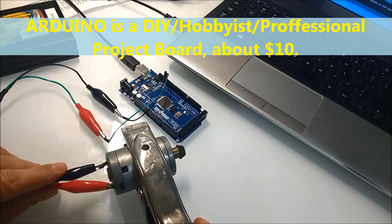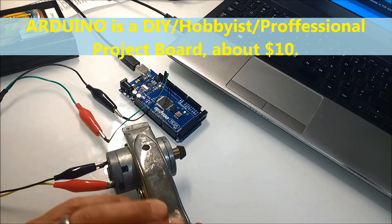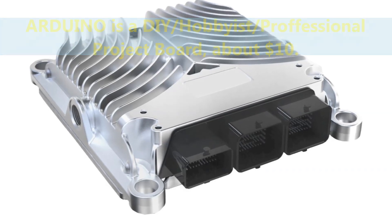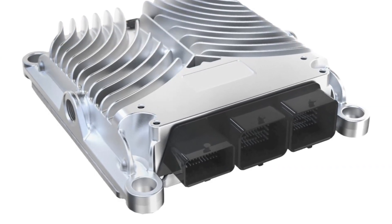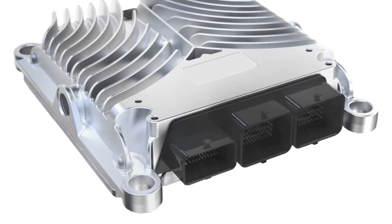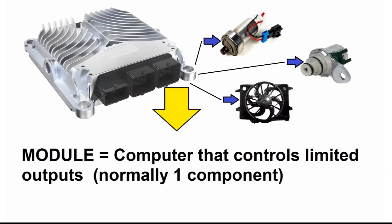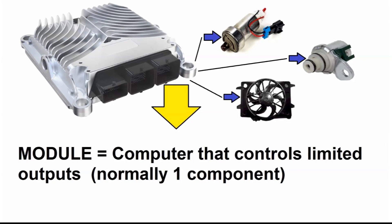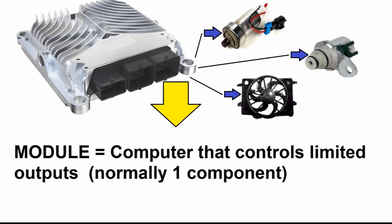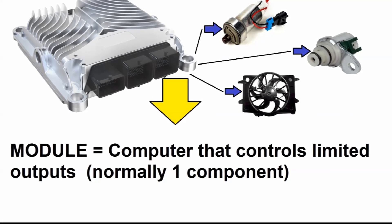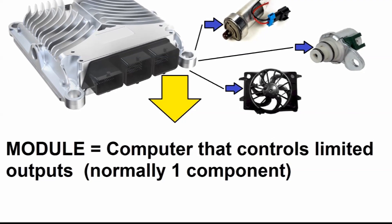In our previous videos, we showed the difference between modules and computers, like an ECM. A module is a computer that tends to control one or two components. It may have a couple of inputs, one, two, or three, but very few outputs, as opposed to a TCM, a transmission control module, or an engine control module.